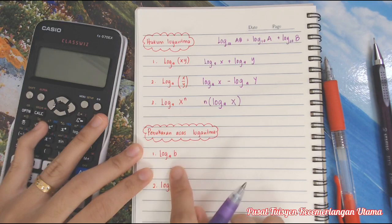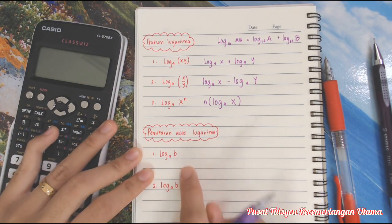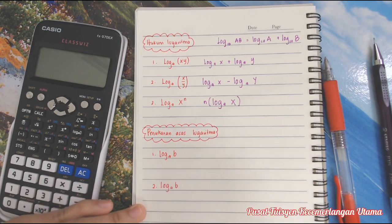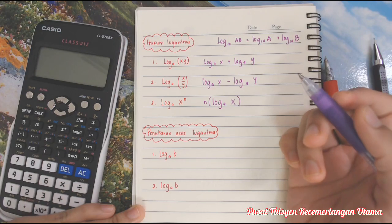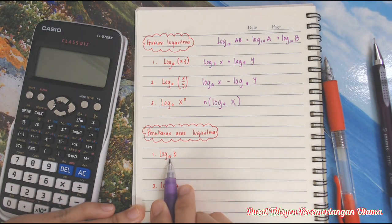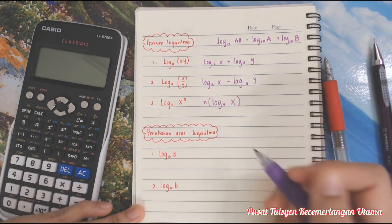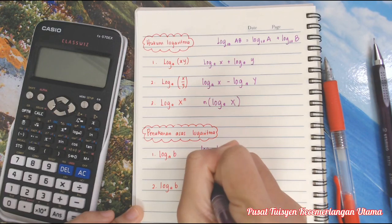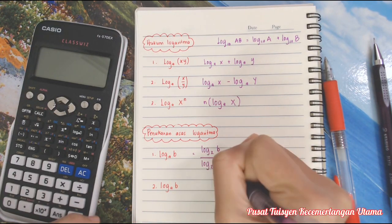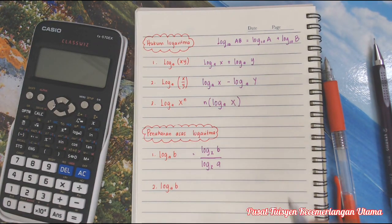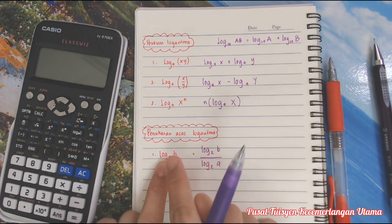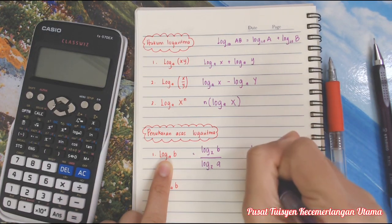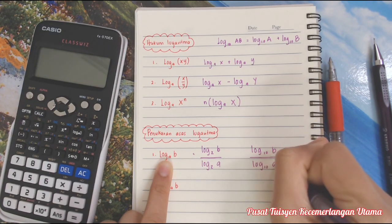Ramai pelajar, cikgu pun dulu lupa ni. Macam ni log 10, ni log 7, macam mana nak jadikan sama ni. Contohnya cikgu nak tukar kepada log a, asas dia A kan? Kita nak tukarkan kepada log Z. Dia jadi log Z B over log Z A. Contoh awak nak tukar jadi log 10, dia jadi log 10 B over log 10 A.